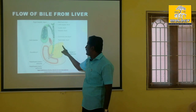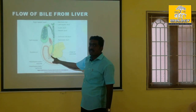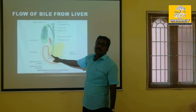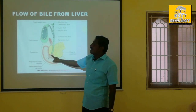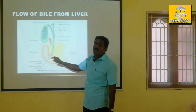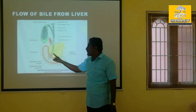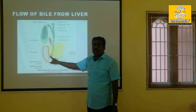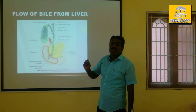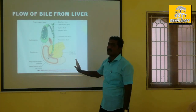Next comes the pancreatic duct, then the hepatopancreatic ampulla, and finally the duodenum. So the full sequence is: hepatic duct, pancreatic duct, hepatopancreatic ampulla, and duodenum. This is the correct sequence.